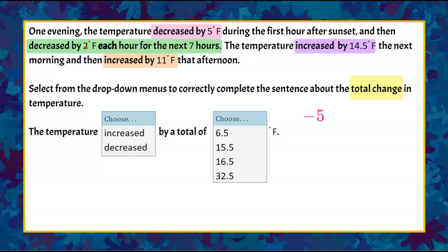Next, it decreased by 2 degrees each hour for seven hours. Decreased means it dropped, or negative 2, and it did this seven times because it did it every hour for seven hours. Negative 2 multiplied by 7 is negative 14. So the first drop was negative 5 in that first hour, and then the next seven hours it dropped a total of 14 degrees.